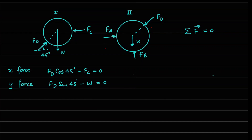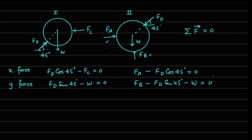Applying the same idea to cylinder two: the X force balance gives FA minus FD cos45° equals zero. In the Y direction, FB going upwards minus FD sin45° — which acts downward — minus the weight W equals zero.